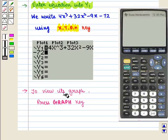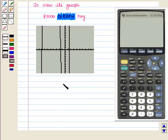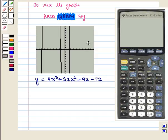To view its graph we press graph key. On the screen the graph of the polynomial function y equals 4x cubed plus 32x squared minus 9x minus 72 will appear on the coordinate axis. Now this is 10 by 10 viewing window.